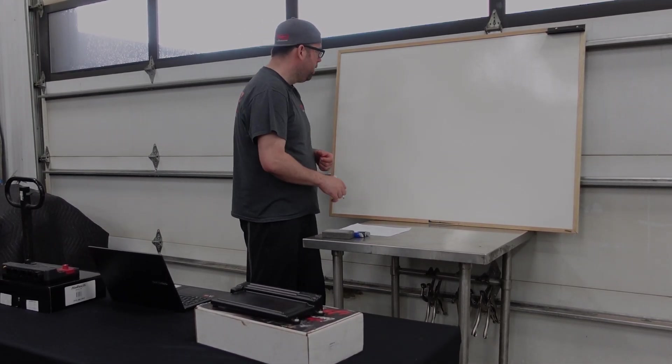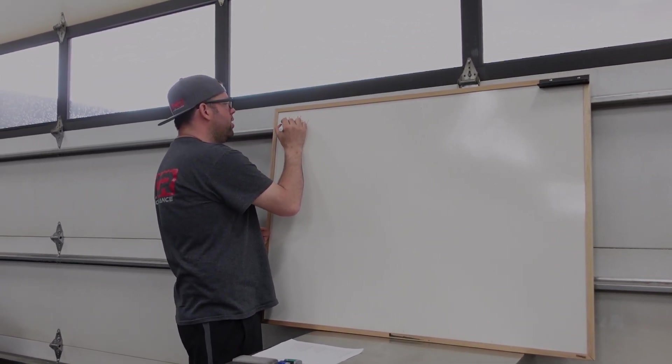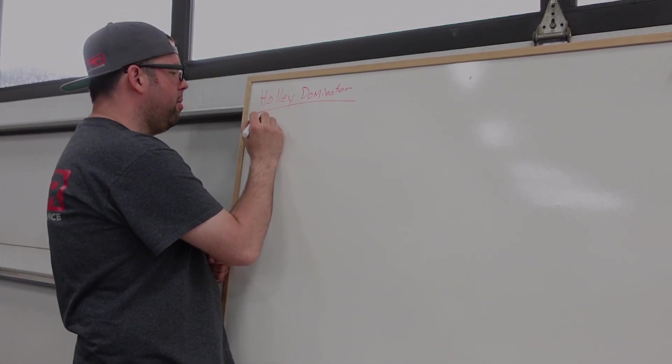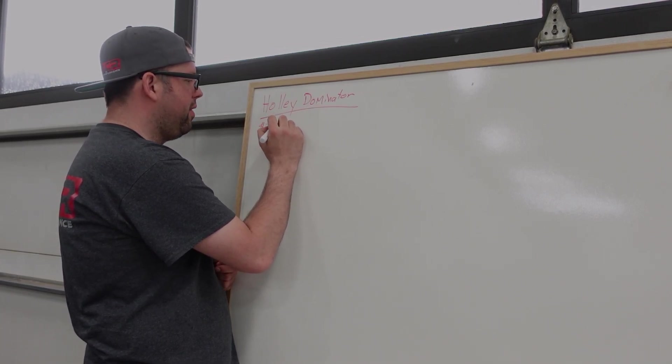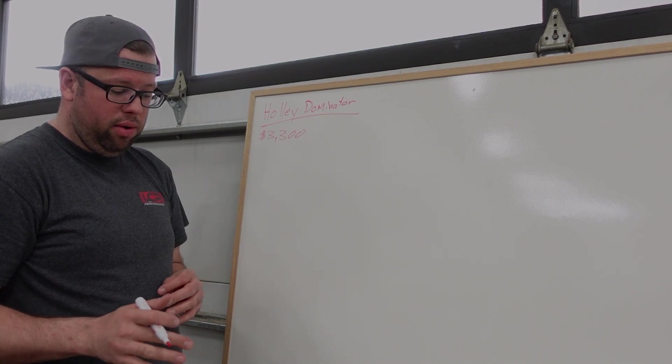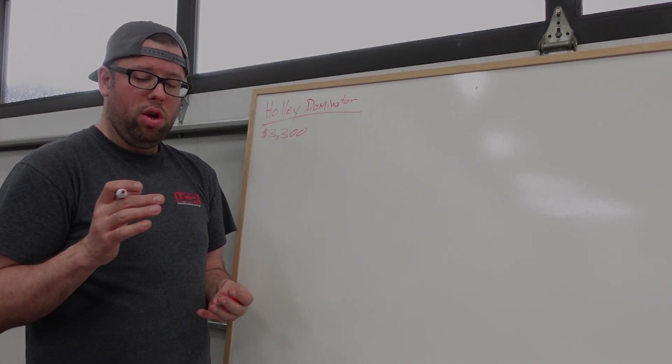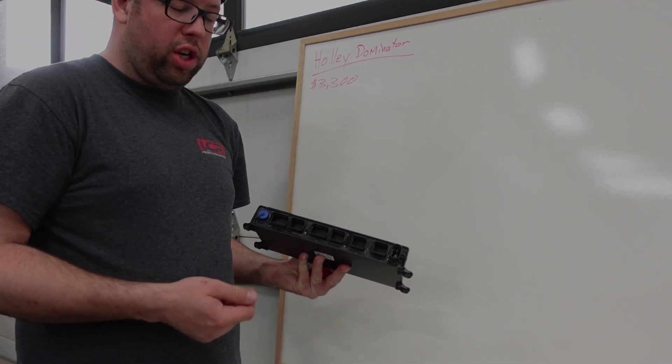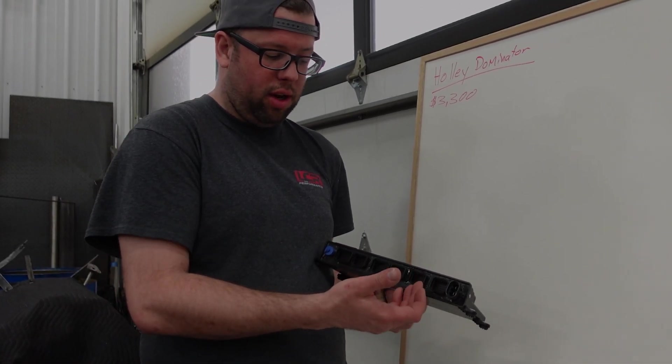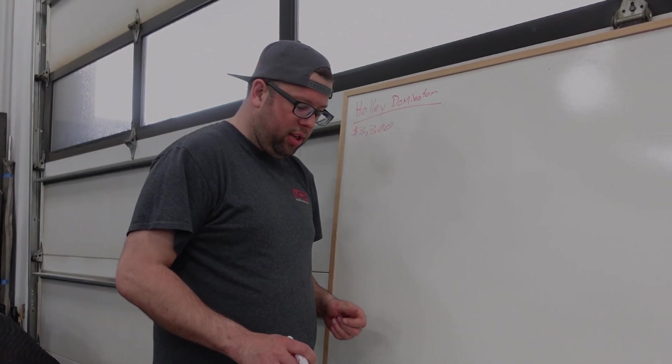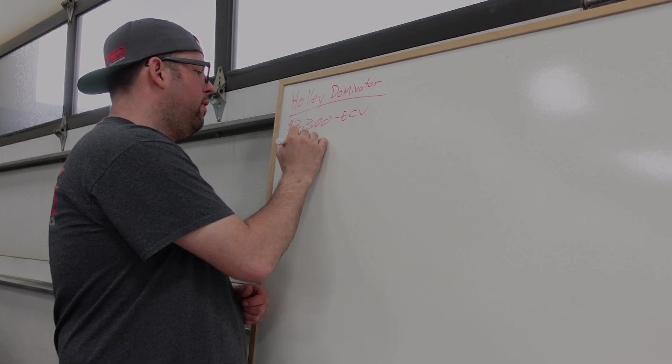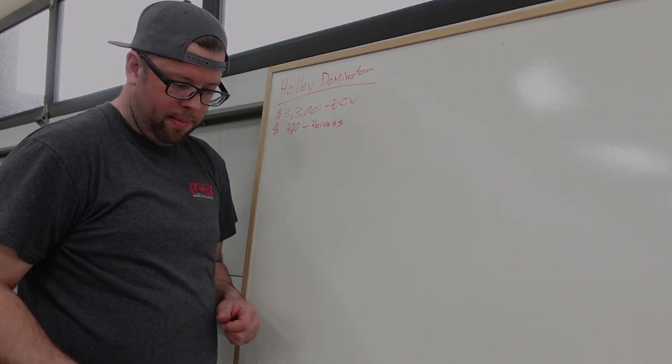So for the Holley Dominator, the ECU, and these are all today's retail pricing because Holley every year likes to go up every single year after Holley days, $3,300 US. Then, you need, as I said, the Holley comes with bare bones, nothing. You need now the harnesses for each one. So there is multiple ports for the Holley. You have your J1A, J1B, J2A, J2B, and J3, J4 and your main power. So you need harnesses for every single one. We're going to compare them both the same. So for all those harnesses you need, that's another $400. So that's ECU, $400 harnesses.